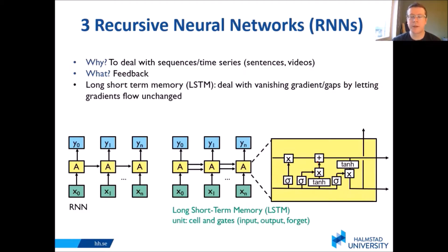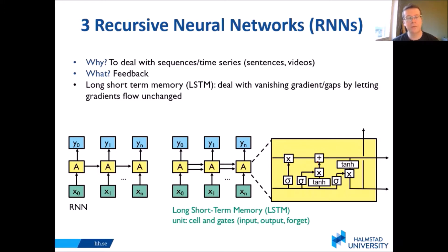Recurrent neural networks. Sometimes we're not dealing with just an image, but we've got some type of sequence — maybe a sequence of images or some other time series. We can use an RNN where there's feedback. We've got some type of input like X0, X1, Xn — these can be words or images or whatever — and then outputs Y0, Y1 to Yn. It passes through this recursive network that's also feeding back into itself.